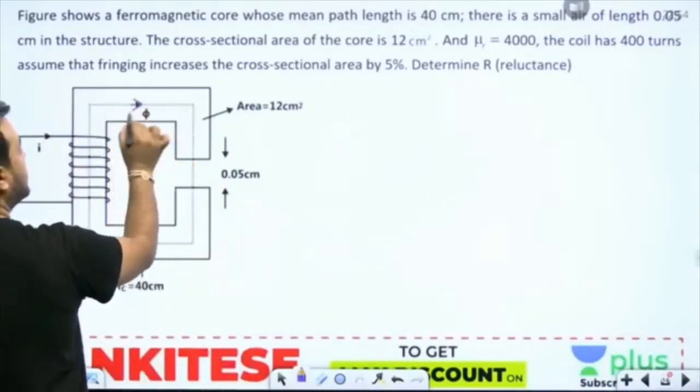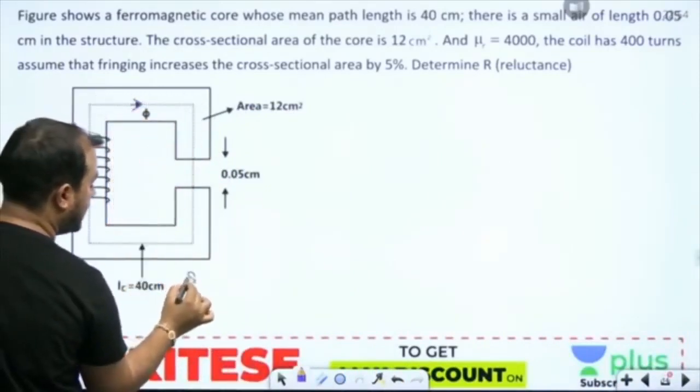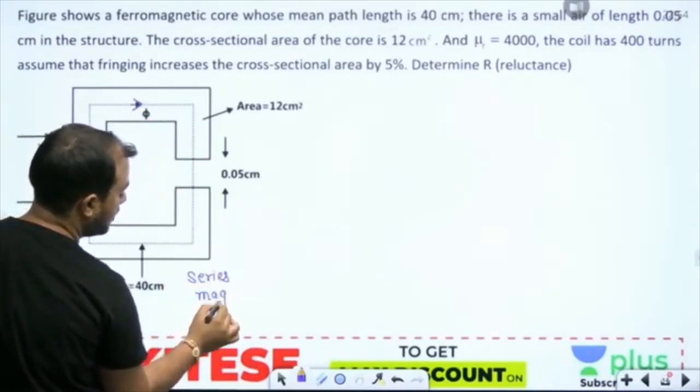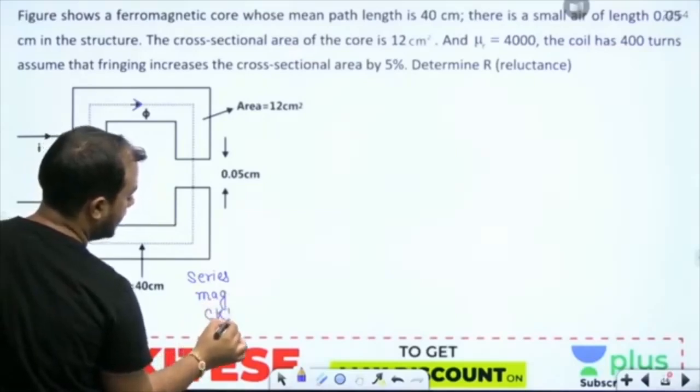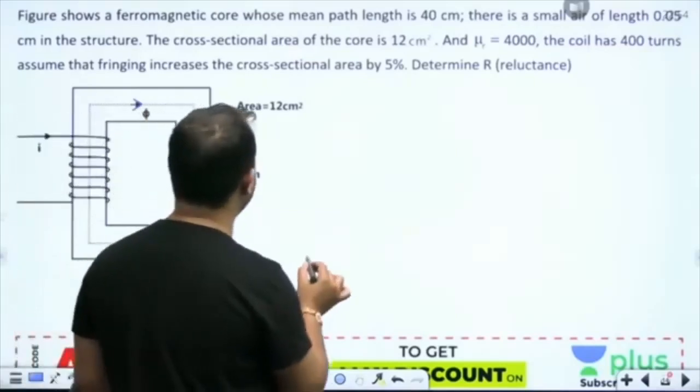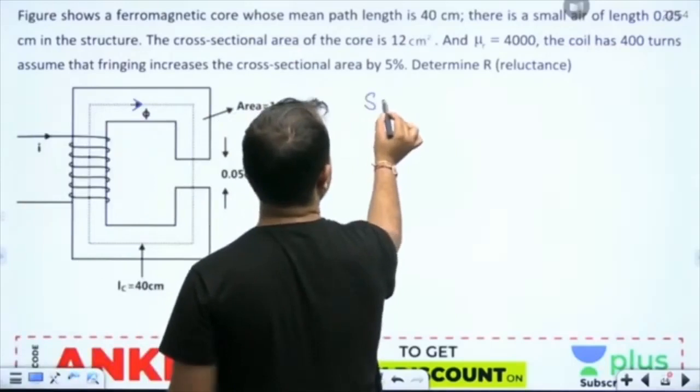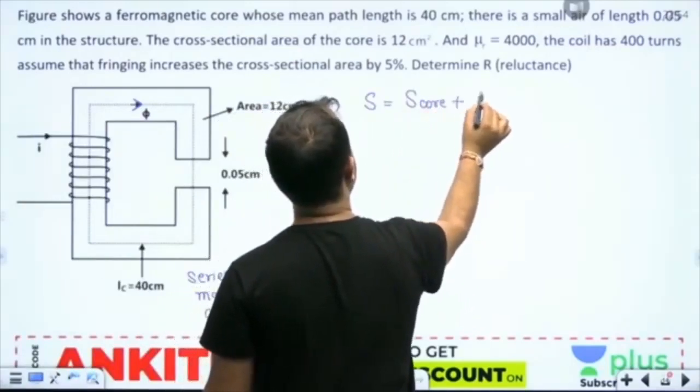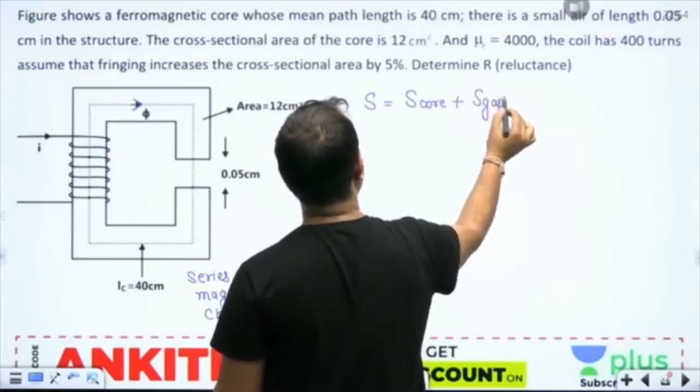Now see guys, whenever the flux is same in the entire material, we call it as series magnetic circuit. In series magnetic circuit, the reluctance is the sum of reluctances.